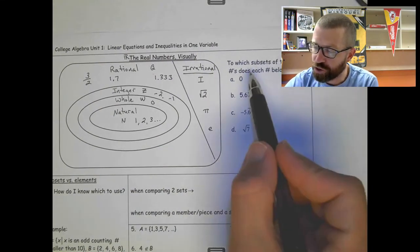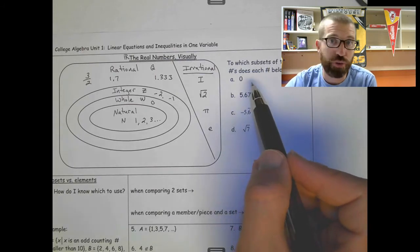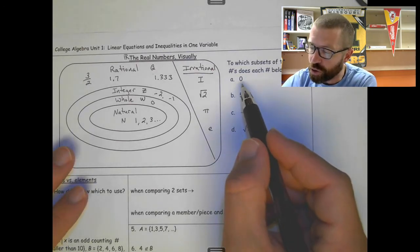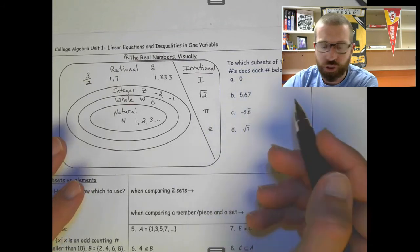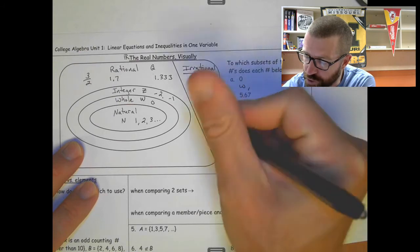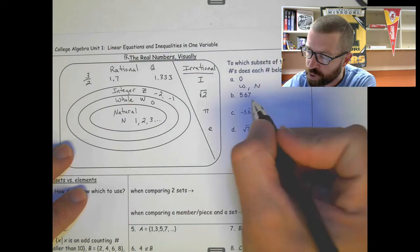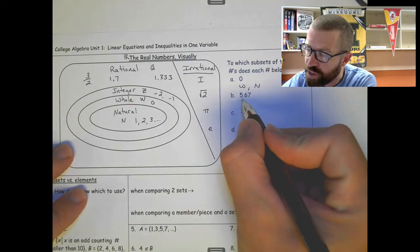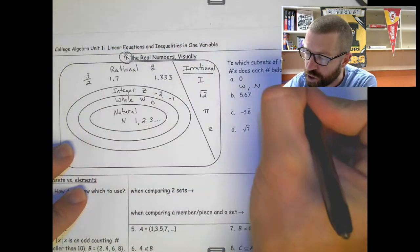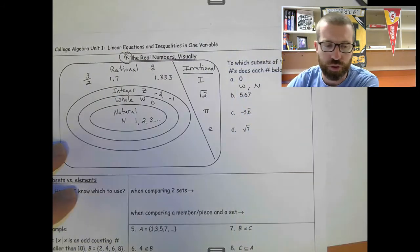Okay, so this question here says, to which subsets of the real numbers does each number belong? So pause this video, try to answer this on your own, and then see how you did. And there are going to be more than one answer on some of these. So 0 belongs to the whole number, and then also everything inside of the whole numbers, which is the natural numbers. And then notice these are all real. I think I forgot to mention this, or we use this R. So you don't have to say real when it comes to the subsets, because every single one of them is a real number.